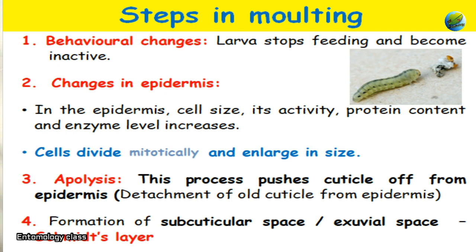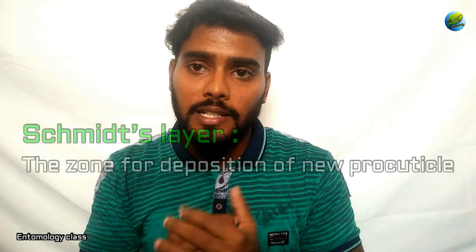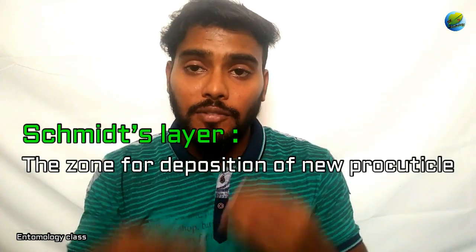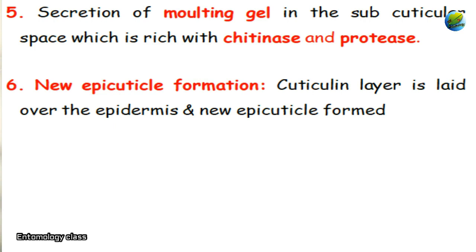Following the changes in the epidermis, the next step is apolysis — the detachment of the old cuticle from the epidermis. This process pushes the cuticle off from the epidermis. A gap is formed called the subcuticular space or exuvial space between the epidermis and the cuticular part. The small layer created is called the smith layer. The fifth step is the secretion of molding gel, which is not yet activated, in the gap between the epidermis and cuticle.